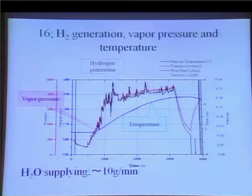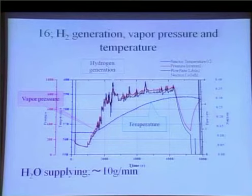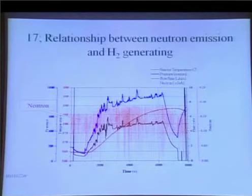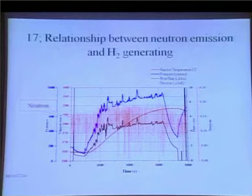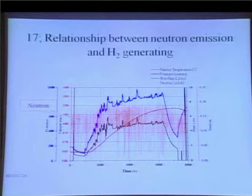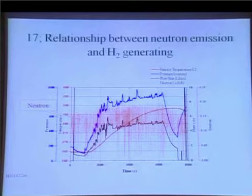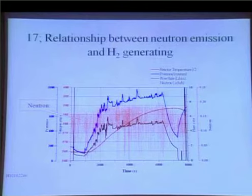This graph shows another result of hydrogen generation — again, the time change of vapor pressure, rate of hydrogen generation, and temperature change. This shows the behavior of neutron generation, indicated by the dotted line. It shows the same change as the rate of hydrogen generation. This is the background level; neutron counts are increasing, and this neutron generation rate is almost coincident with the hydrogen generation rate.